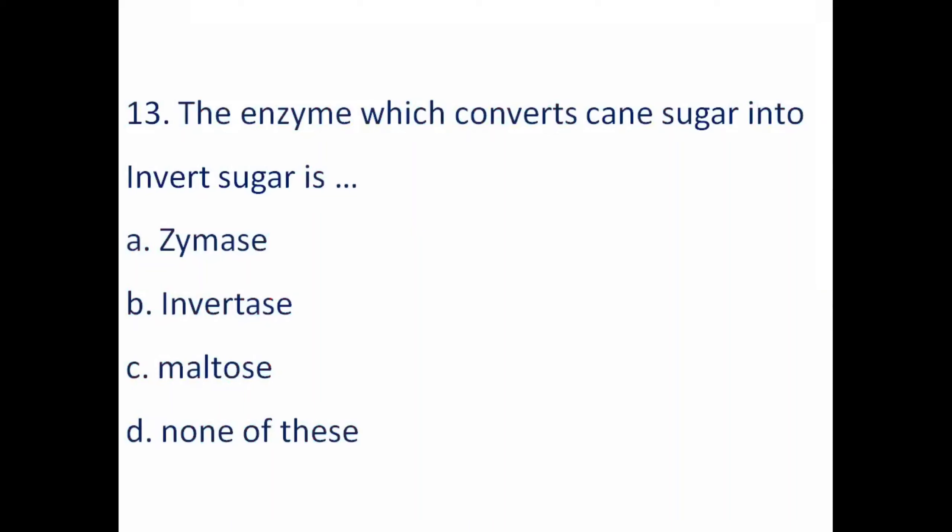The enzyme which converts cane sugar into invert sugar — that is glucose and fructose — is: A) Zymase, B) Invertase, C) Maltose, D) None of these. The right answer is B — Invertase. The enzyme which converts cane sugar into invert sugar is Invertase.